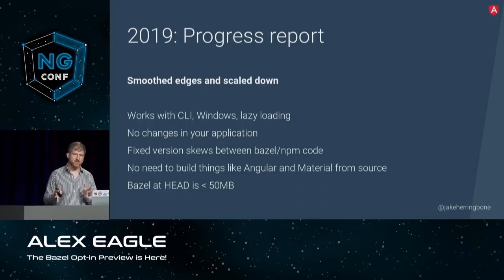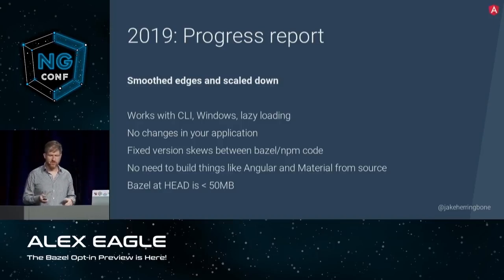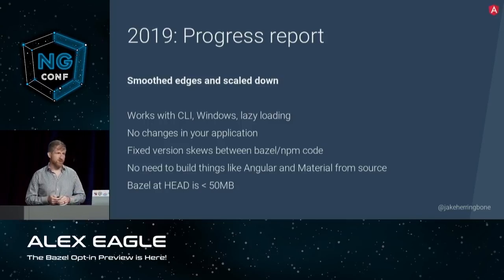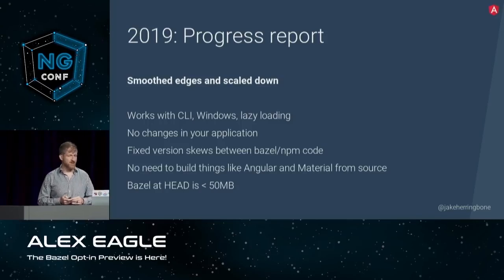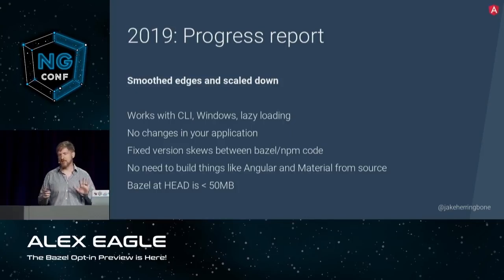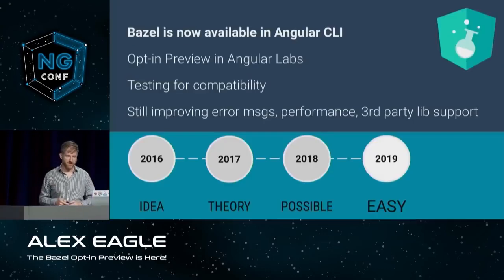We've also made it scale down to fit into a smaller project, because our usage at Google is that Bazel is used in really large projects. For example, the Bazel team, based on our feedback, went from around 180 megabytes for the @bazel/bazel NPM package, and the latest number is less than 50. So they're working on trimming things out and making it fit better into our lives as front-end developers.